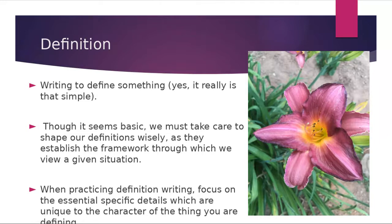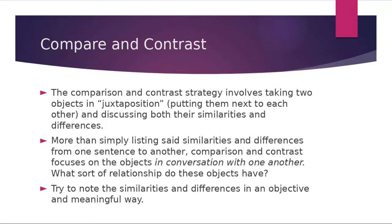Compare and contrast: sometimes the best way to understand something is by putting it next to something else. Apples and oranges are both fruit — they compare in that way — but they can also be heavily contrasted: different colors, tastes, textures, and qualities. Putting two things next to each other and comparing and contrasting them gives your reader a better understanding of both by virtue of their relationship with one another. More than simply listing similarities and differences, comparison and contrast focuses on the objects in conversation with one another. Try to note the similarities and differences in an objective and meaningful way.